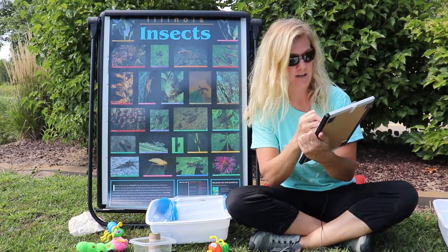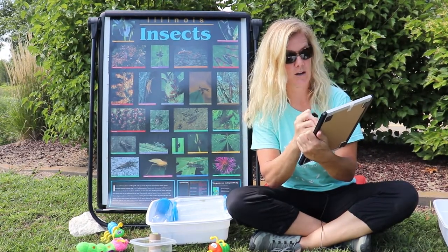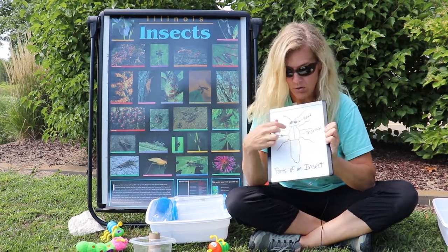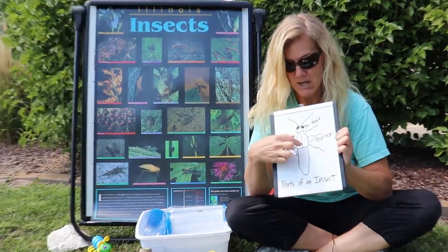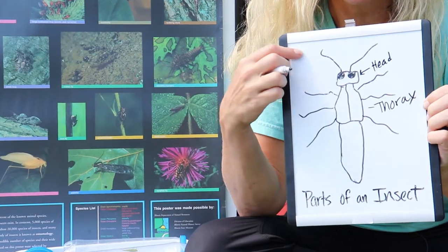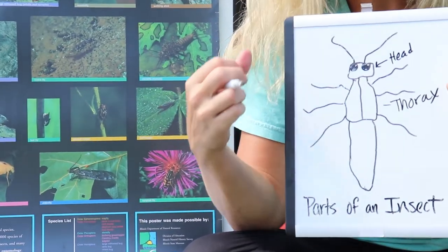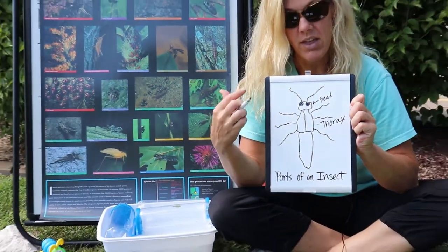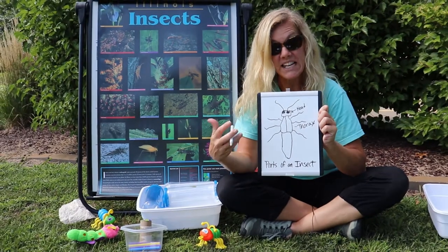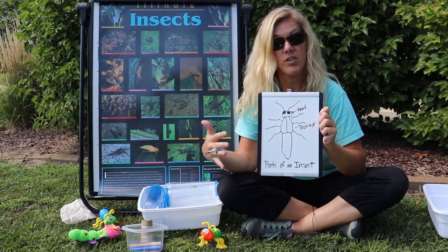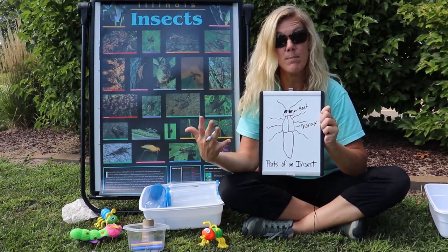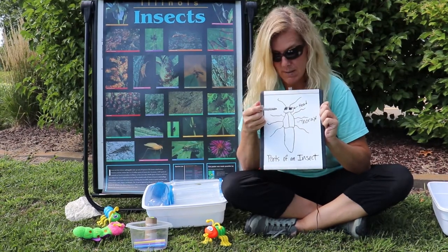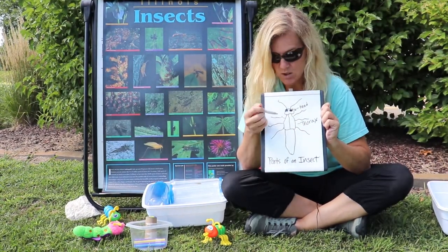The second part of an insect is the thorax. The thorax is this middle section right about here. The thorax contains the structures needed to be mobile, or for the insect to move. All insects have three pairs of legs, or six legs total.